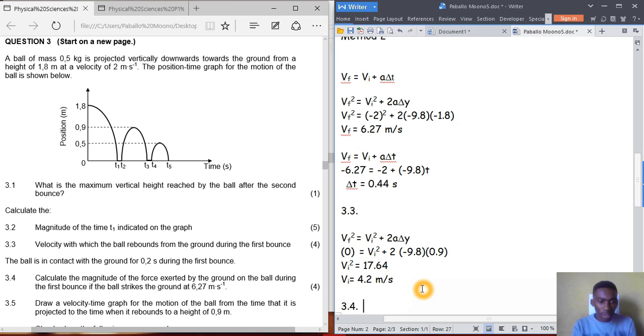Problem 3.4: Calculate the magnitude of the force exerted by the ground on the ball during the first bounce. The ball strikes the ground at 6.27 meters per second and rebounds at 4.2 meters per second. The ball is on the ground for 0.2 seconds. So we need to find the force.